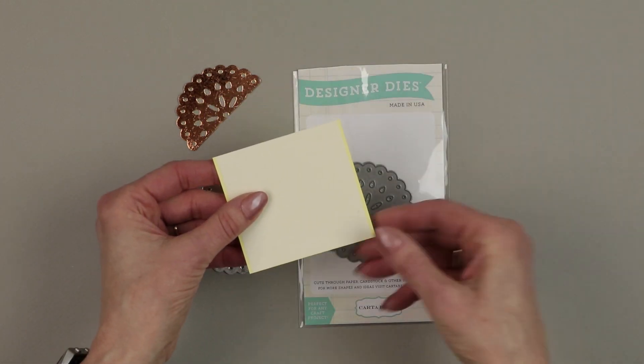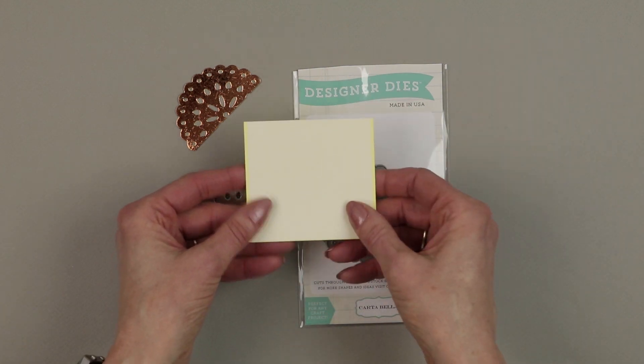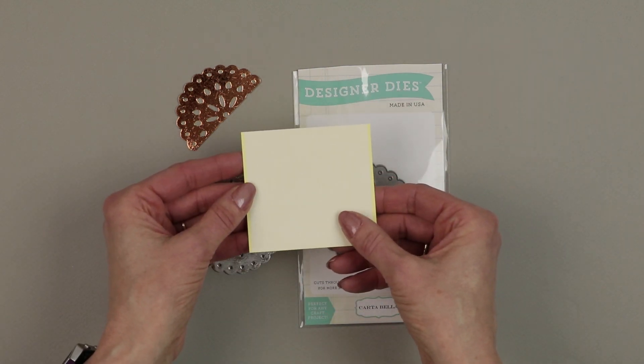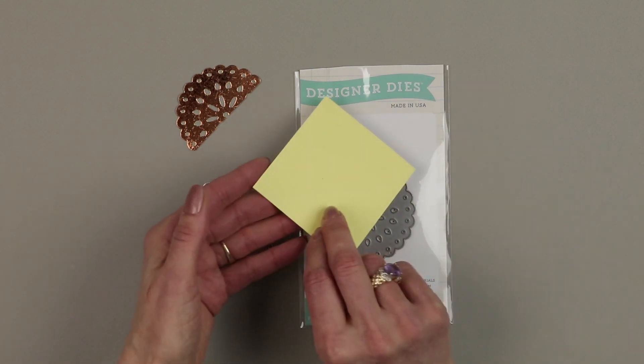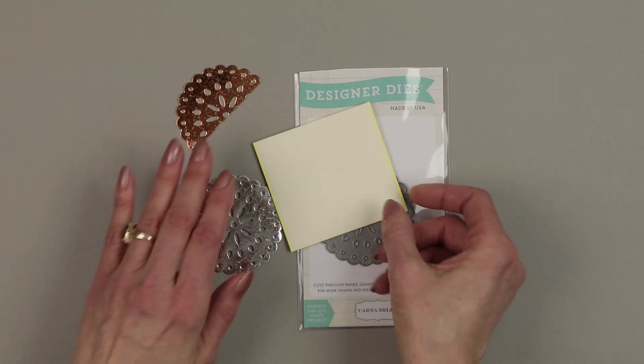I went ahead and just lifted one side of the adhesive up, put it on the paper so it's actually attached to the paper, and then I'm going to run this through the die cut.